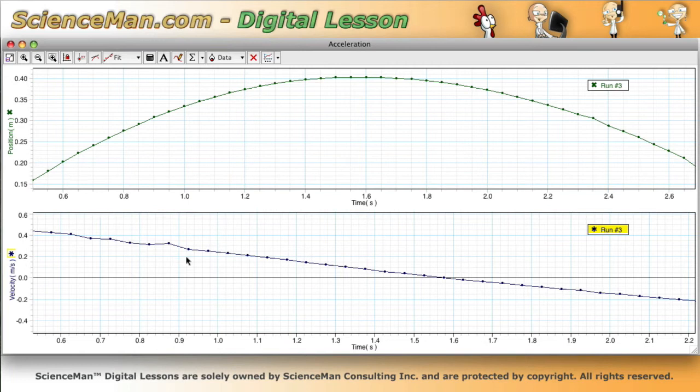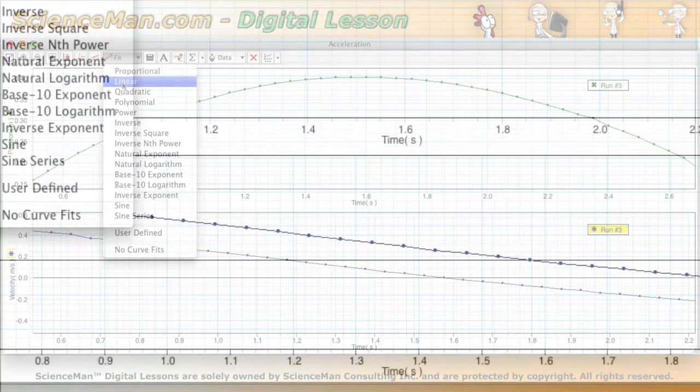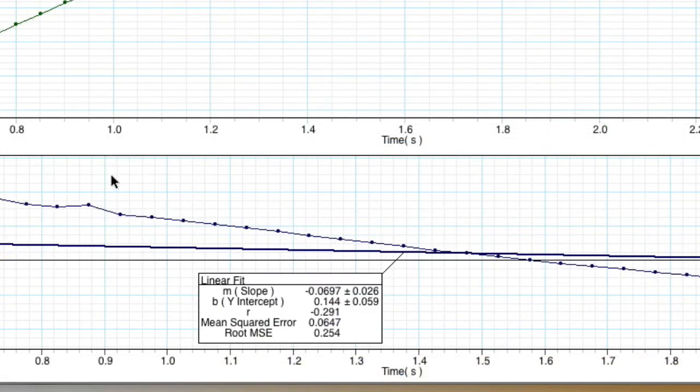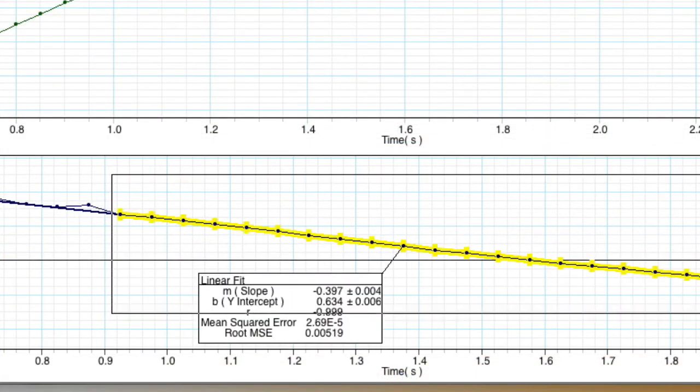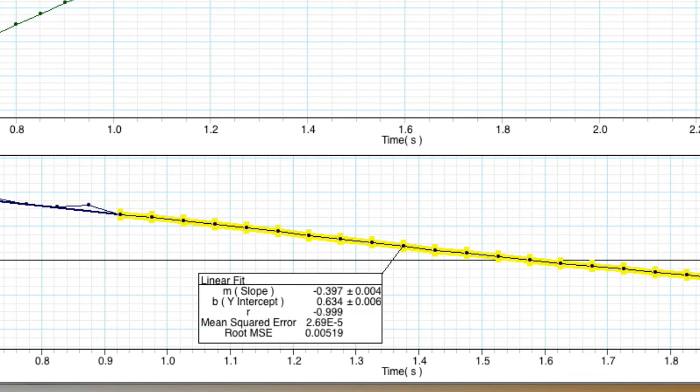And we can even do what we did before and apply a linear fit to this. And since we have meters per second in the units, velocity of course is meters per second and time is in seconds, we would be, if we did a slope calculation, we'd be taking the change in velocity over the change in time.